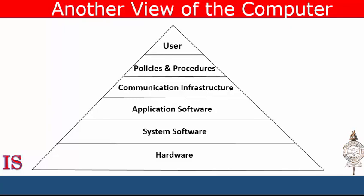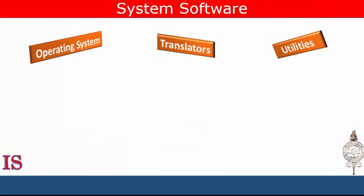As we proceed in this video we'll be discussing the software layers of our pyramid in more detail. We'll start with system software. Just as the name implies, system software is software used to create, manage, and use the computer system. Here are the three most important categories of system software: the operating system, translators, and utilities.